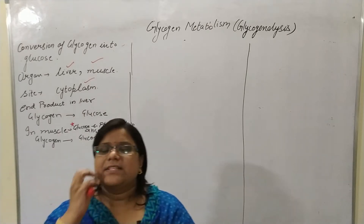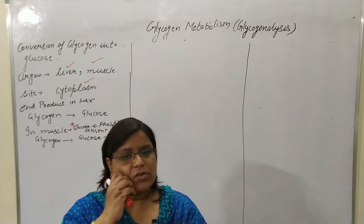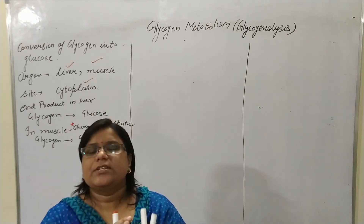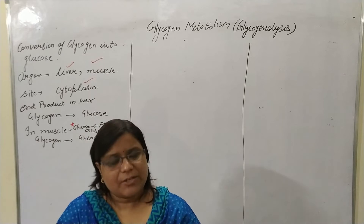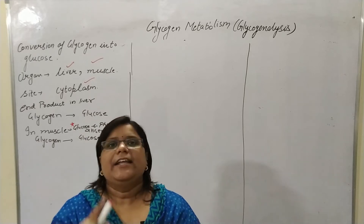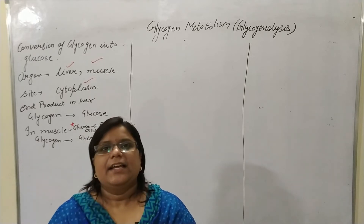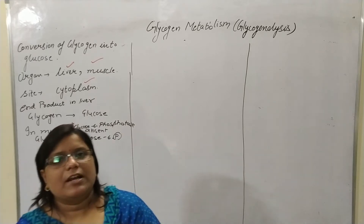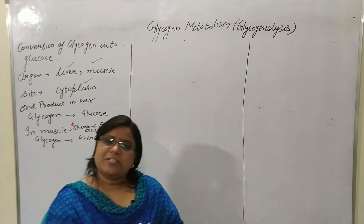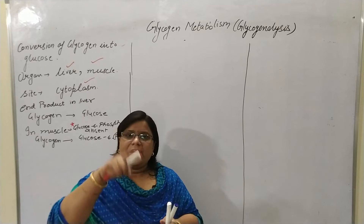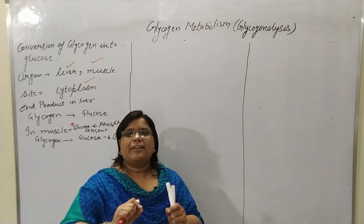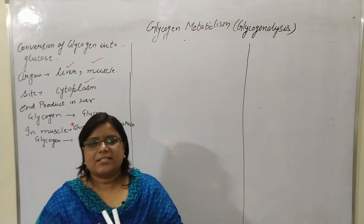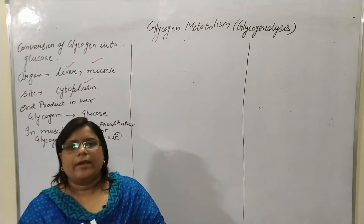As previously discussed, glycogen is both a linear and branching molecule. In the linear sites, the alpha-1,4 glycosidic linkage is present, whereas in the branching sites, the alpha-1,6 linkage is present.